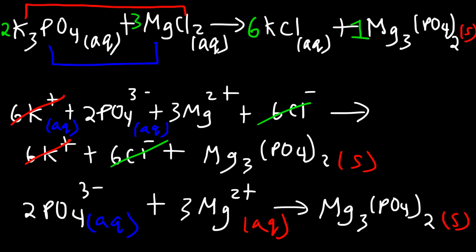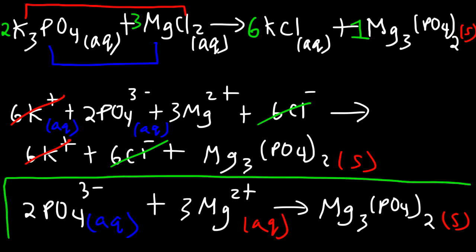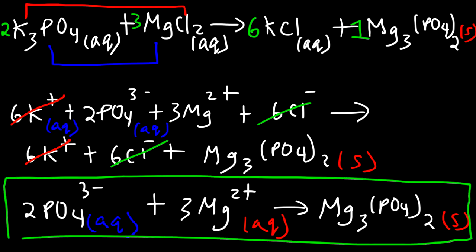And that's basically it. Now you know the steps needed to write the net ionic equation for a double replacement reaction.